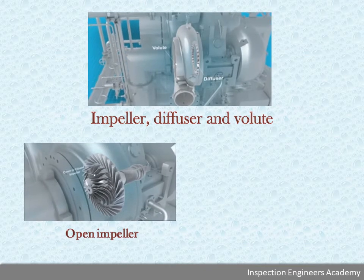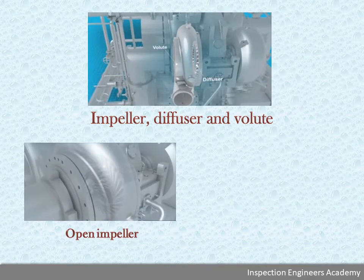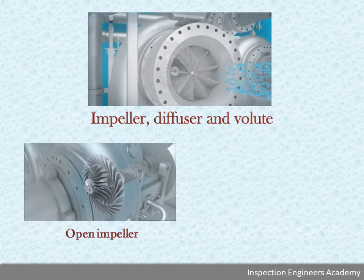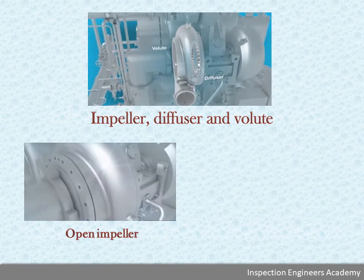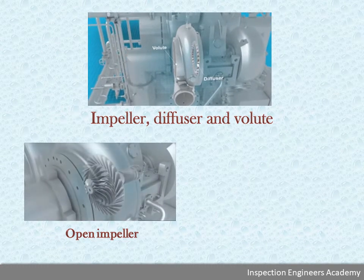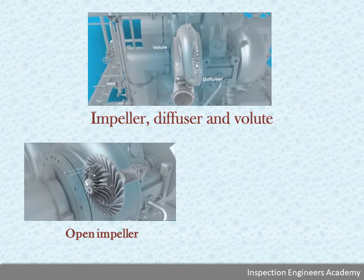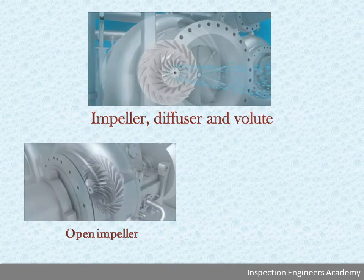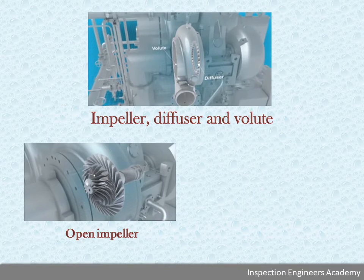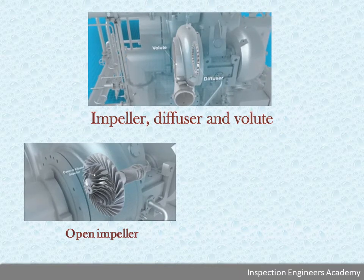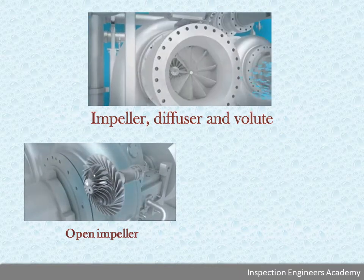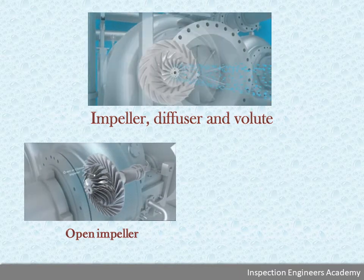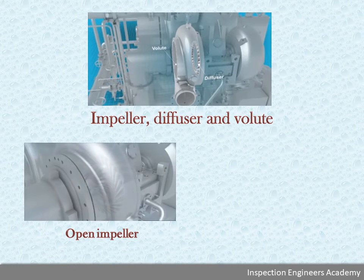In the open impeller, the radial vanes attach directly to the hub. In this type of design, the vanes and hub may be machined from one solid forging, or the vanes can be machined separately and welded to the hub.